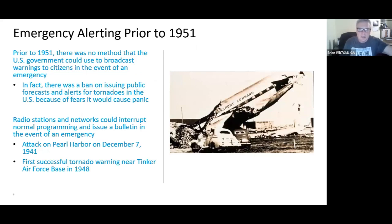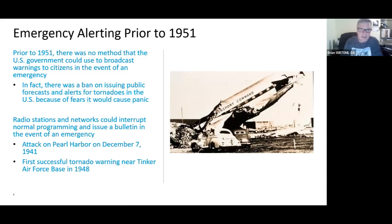Prior to 1951, there was no method the U.S. government could use to broadcast warnings to citizens in the event of an emergency. There was actually a concern that warning them would cause panic — that was especially true for issuing public forecasts and alerts for tornadoes. Radio stations and television networks could interrupt normal programming and issue a bulletin in the event of an emergency, as we saw on December 7th, 1941, at the attack on Pearl Harbor.